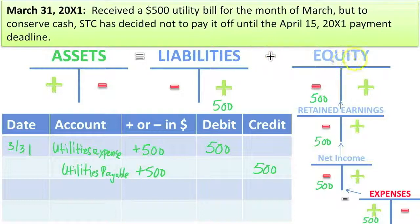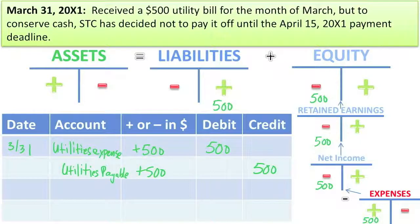The way we show we have more liabilities is to credit the account. Liabilities went up, equity went down, and this whole side has a net change of zero — that's why assets are not affected at all. One of the things I really enjoyed about accounting was the logic to it. If I could just sit down and think about what would make sense, it tended to be the right answer.